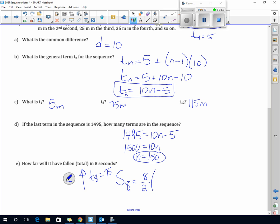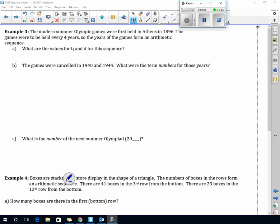Here's a good application of sequences: Olympics. Olympics were first held in Athens, 1896. What are they giving you right there? Term 1. And it's held every 4 years. What are they giving you there? D is 4.